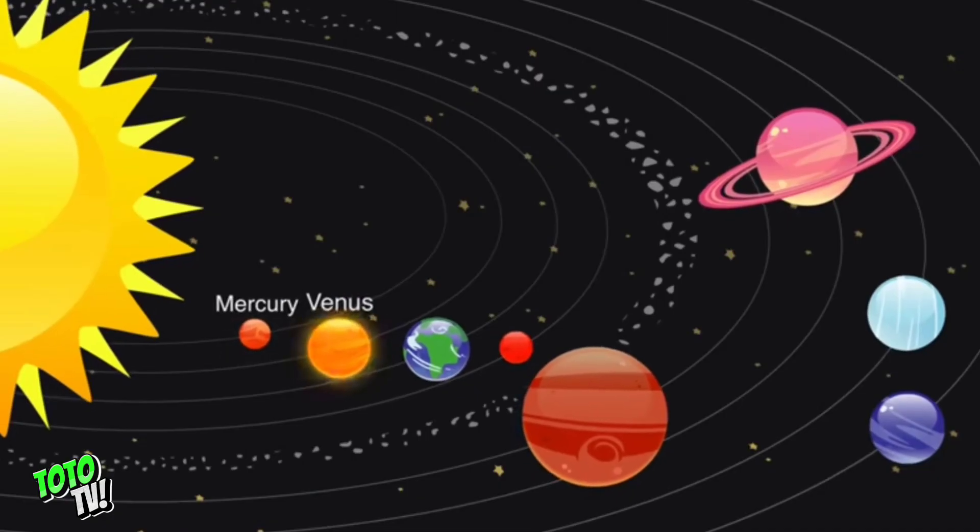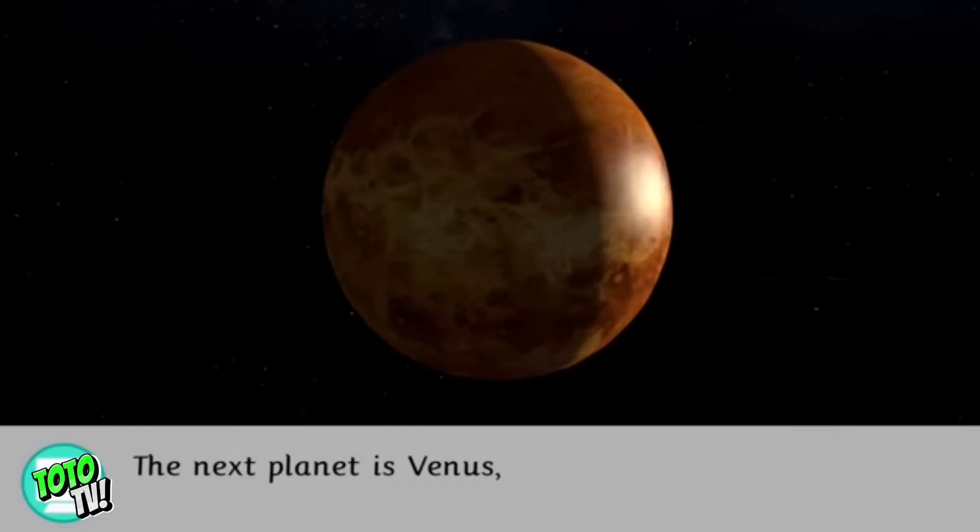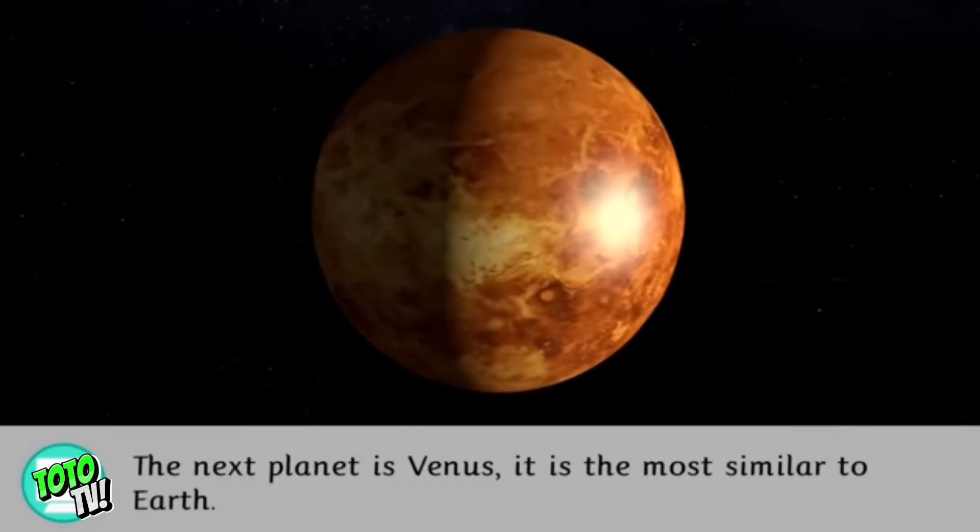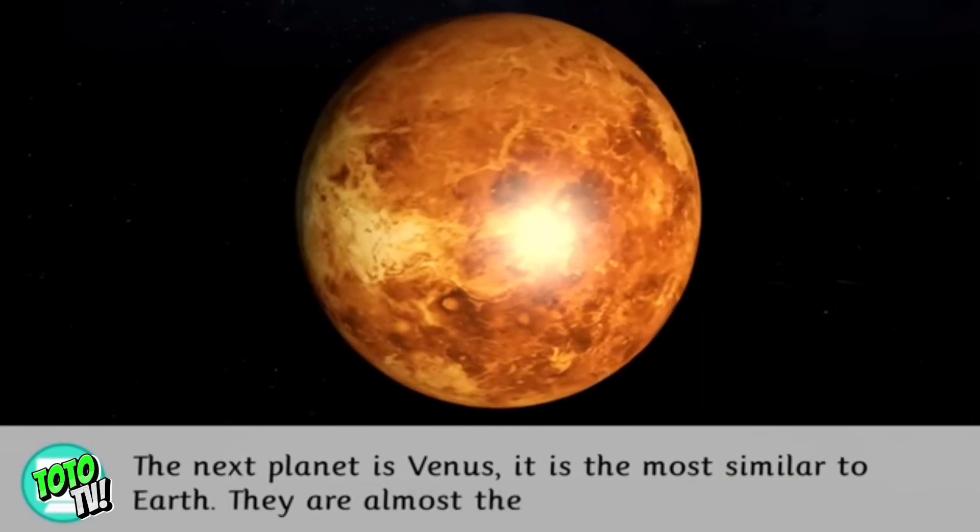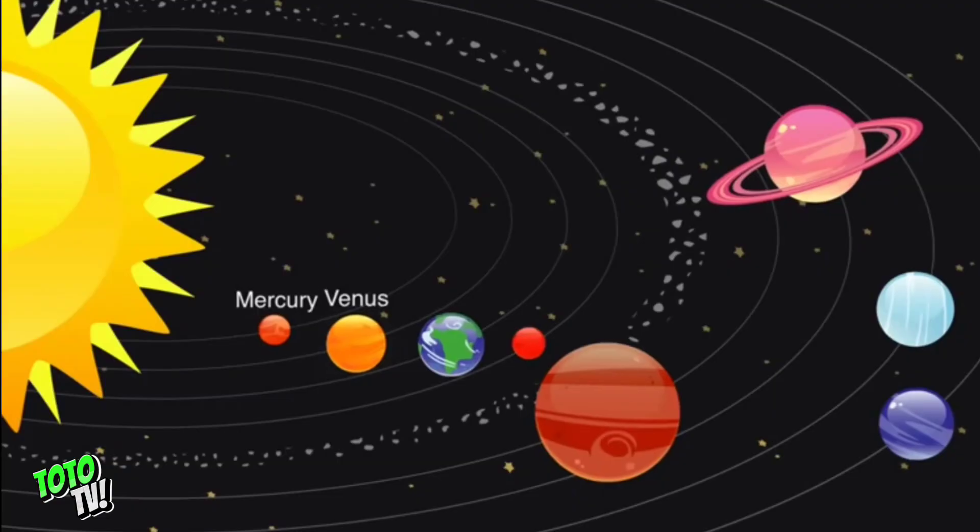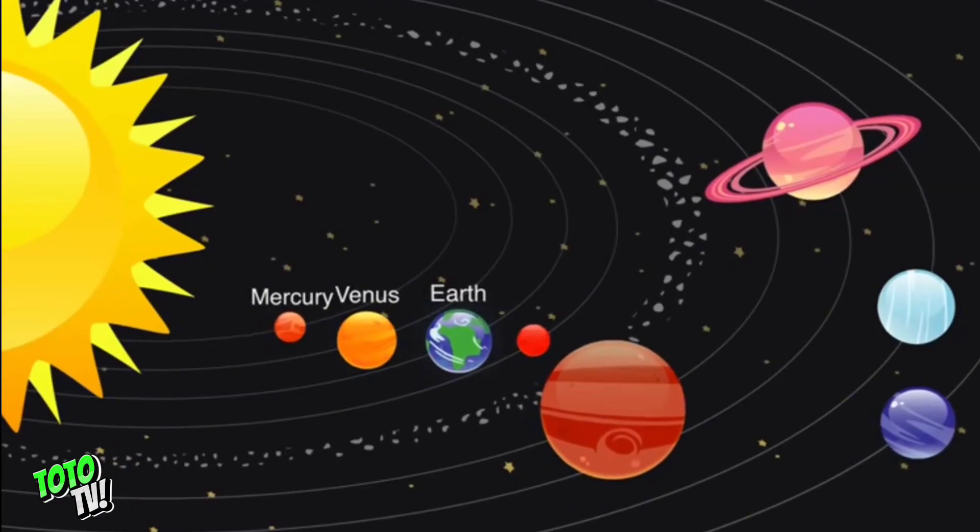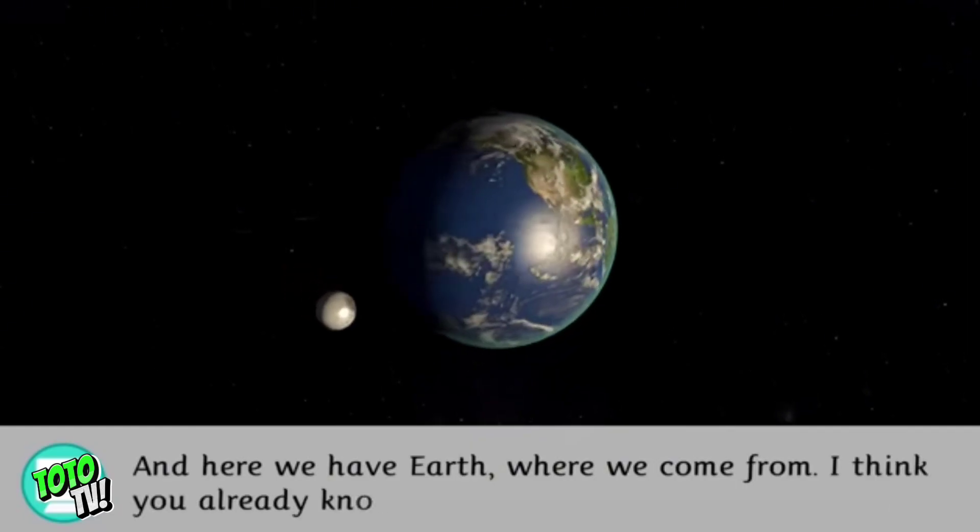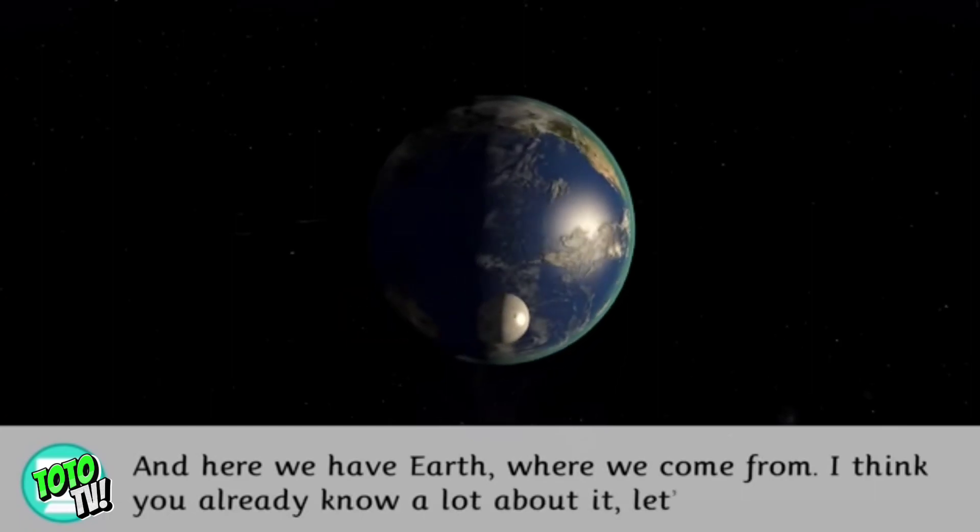The next planet is Venus. It is the most similar to Earth. They are almost the same size. And here we have Earth, where we come from. I think you already know a lot about it. Let's go on to Mars.